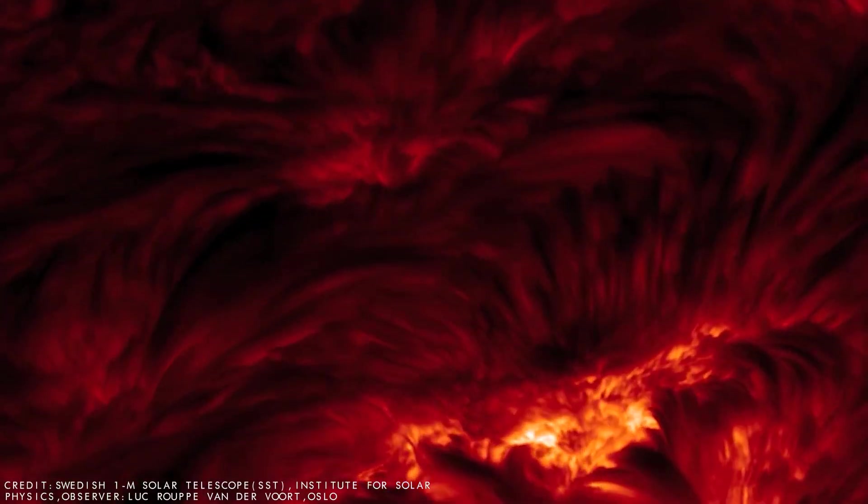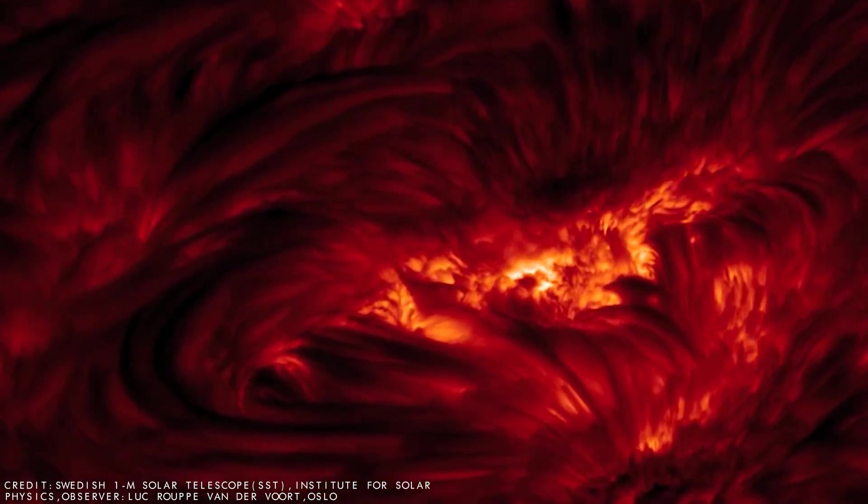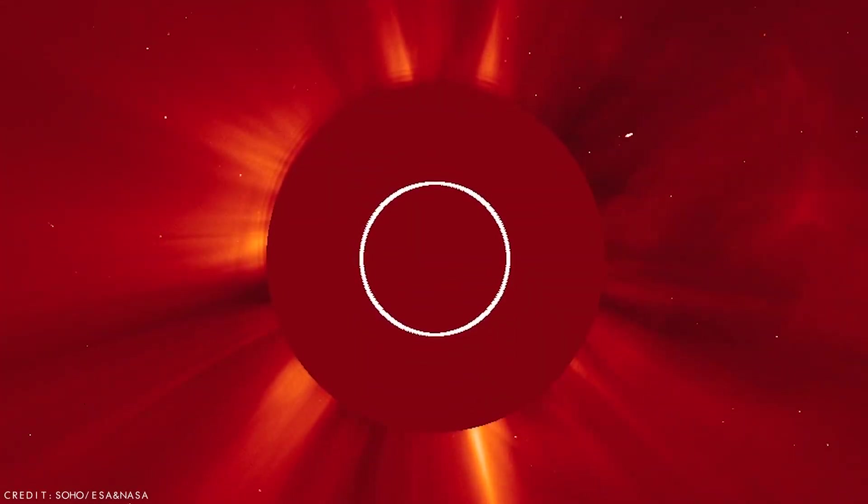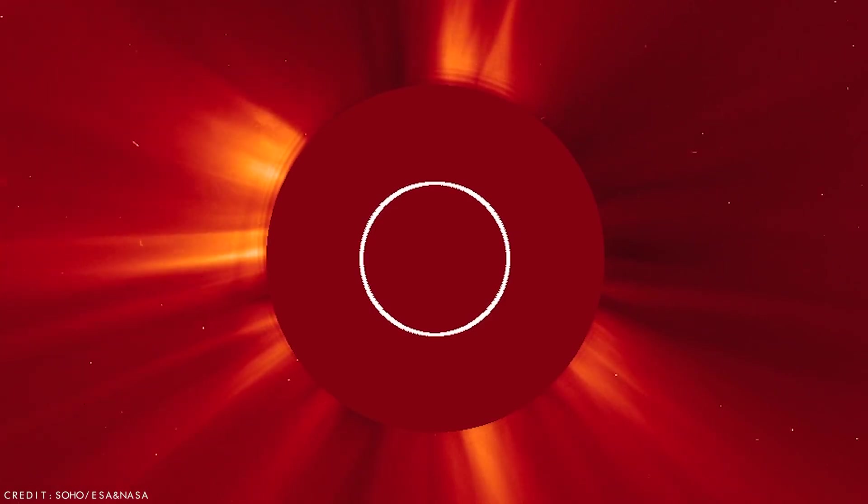Although some estimates place Betelgeuse farther away, it could be as close as 724 light years from Earth. Determining the distances of red supergiant stars like Betelgeuse remains a challenge for astronomy because of its great distance and peculiar characteristics.